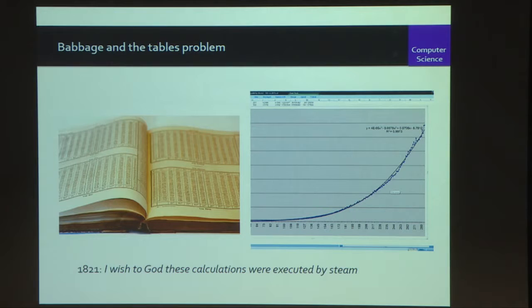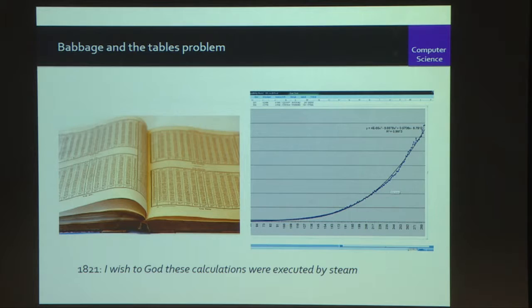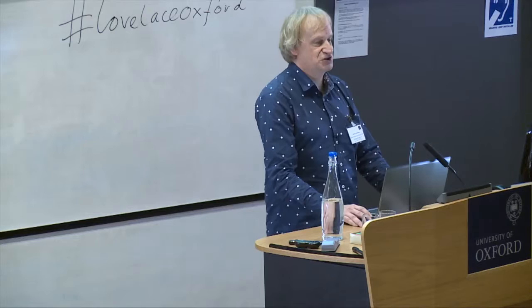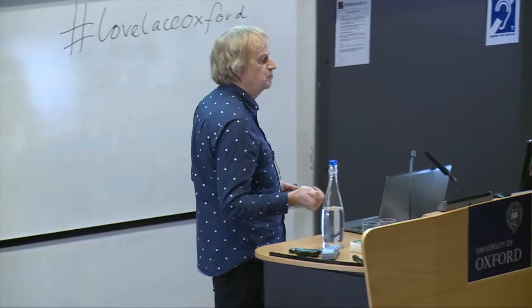We can talk very briefly about what the Difference Engine does. You probably know that you can take equations which are made up of powers of x, and if you do it carefully enough, you can fit them to most other equations — trigonometric functions and so on. The way that these machines were used was to get a competent mathematician to do a piecewise fit of polynomials to the function you actually wanted to compute. And then the Difference Engine, using a method of Newton's, enables you to tabulate the values of that polynomial simply by performing repeated additions or subtractions. They are both very limited and yet very, very useful.